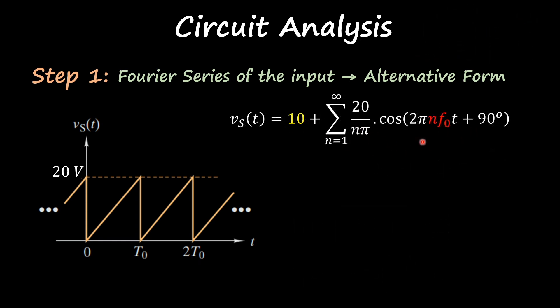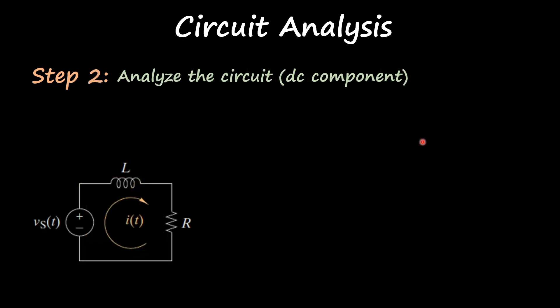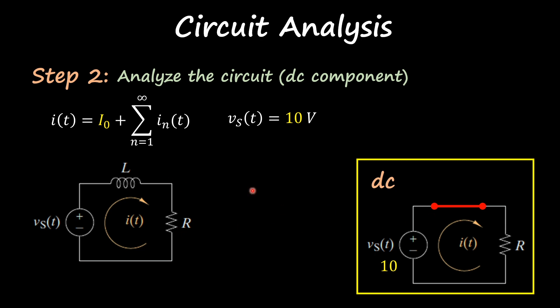Now step number two, we are going to analyze the circuit in DC. We are interested in our current and we know the DC component of our input signal, which is 10 volts. So DC things are fairly easy to analyze. Our inductor becomes a short circuit.